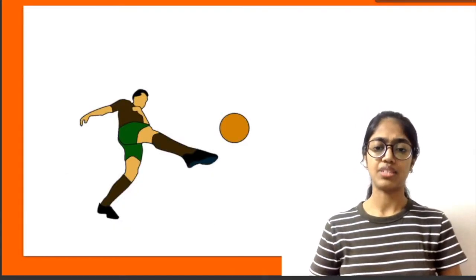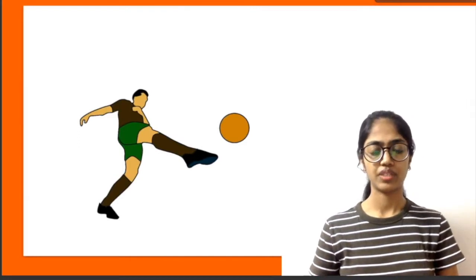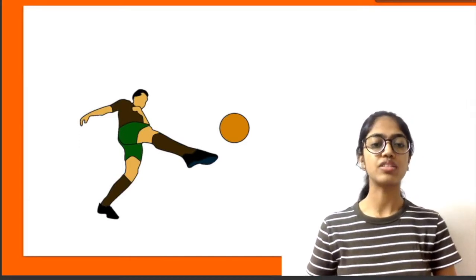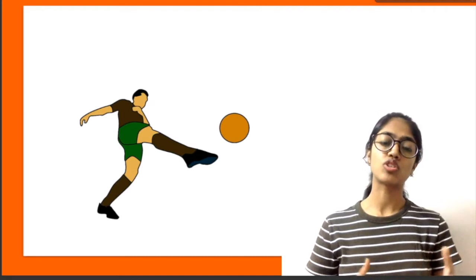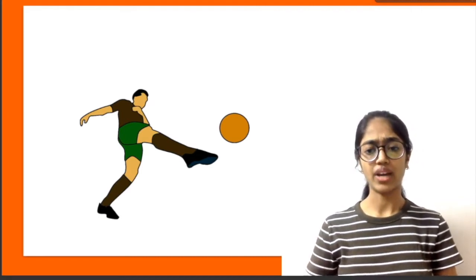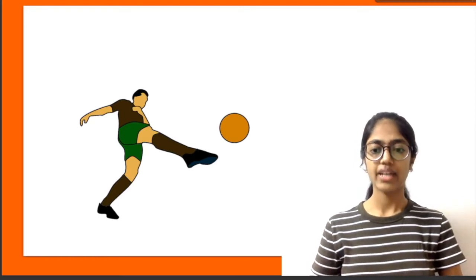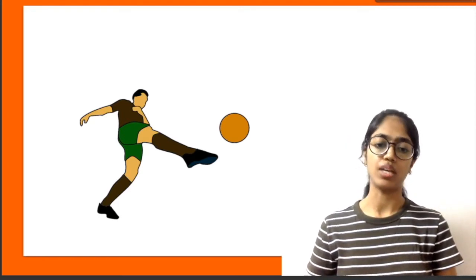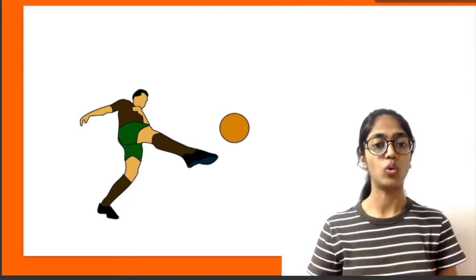Another example can be seen in the game of soccer. If the goalkeeper always knew that the player is going to shoot towards the right, he would have obviously jumped towards the right side to defend the goal and hence the other player would never be able to win as his action is known with certainty to the goalkeeper.